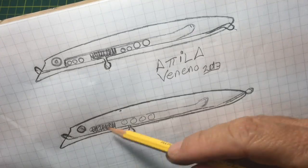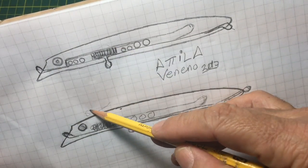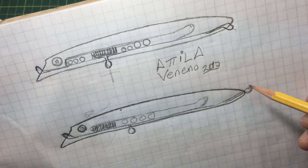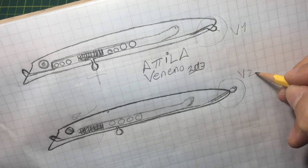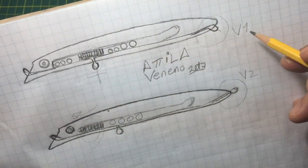I draw two versions, basically changing where to place the weight and the back hook. So I have two versions, version 1 and version 2.